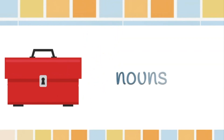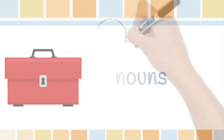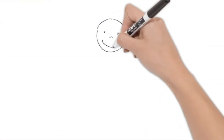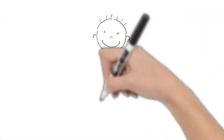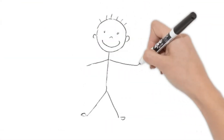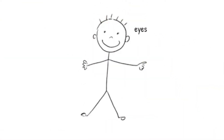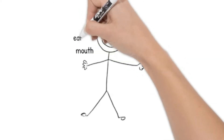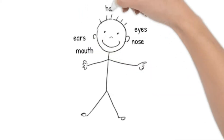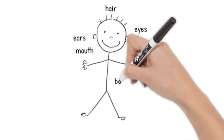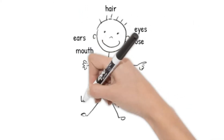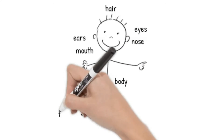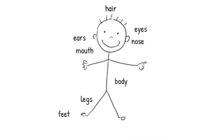The first thing I'm going to need are some nouns. I could describe my eyes, my nose, my mouth, my ears, my hair, my body, my legs, my feet, my arms, or my hands.